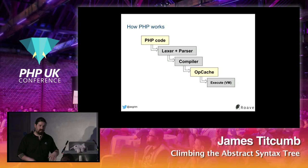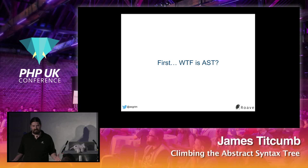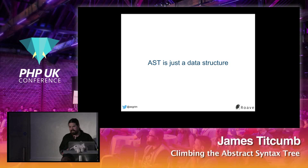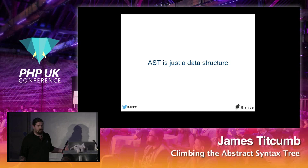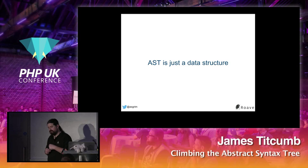The AST exists in between the parser and compiler steps. The result of the parser in PHP 7 is the AST. The AST is then fed into the compiler which converts it to opcodes, and the opcodes are executed. An AST is just a data structure — a representation of your code. It's a tree structure, hence the name, and it's not specific to PHP.